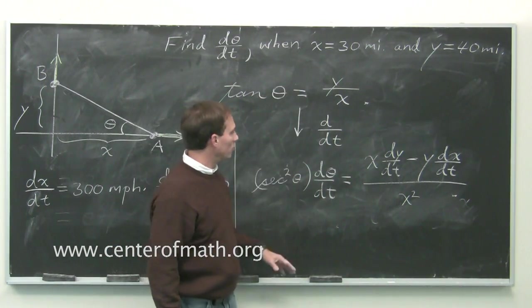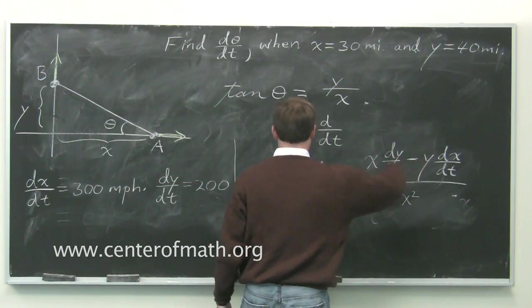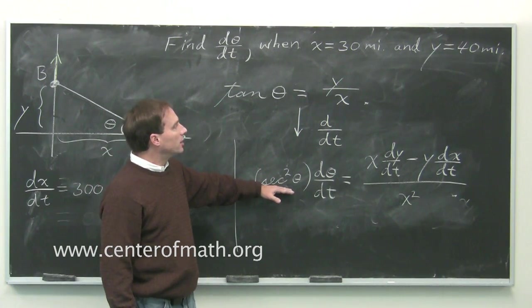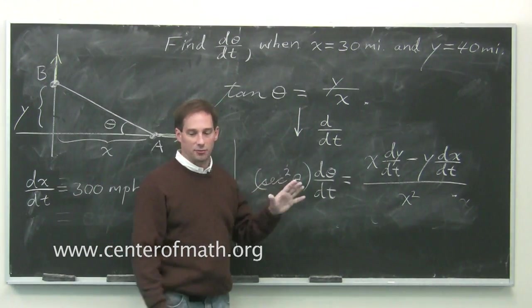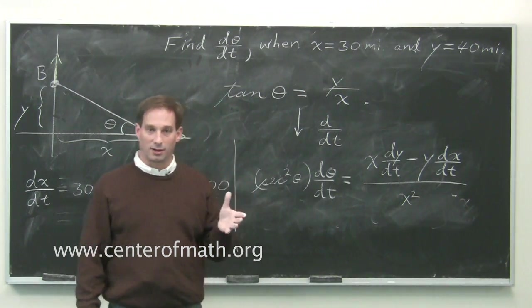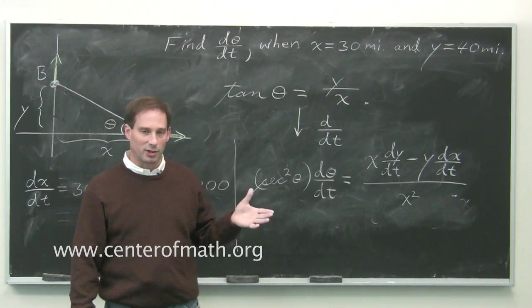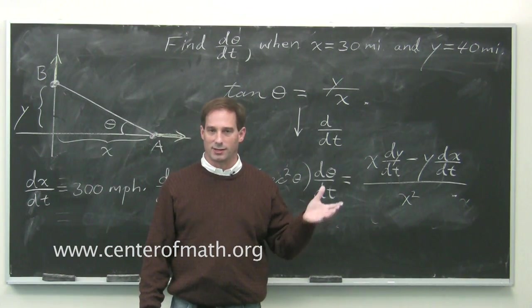You're told x and y at the times you want. We're given dx/dt and dy/dt. We know all of this stuff. You have to figure out secant squared theta when x is 30 and y is 40. But that's just a trig problem. It's not difficult. If you'd like to see the conclusion to this problem. And you'd like to see a lot of other examples of related rates. Go to www.centerofmath.org and download our free videos.